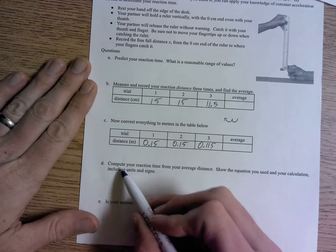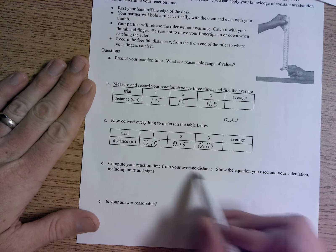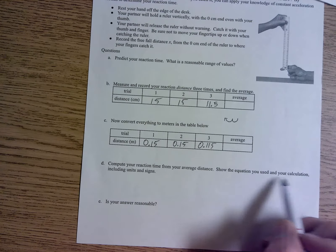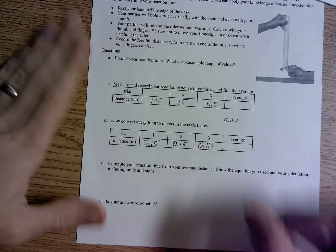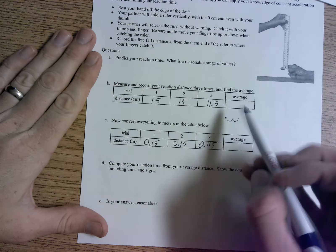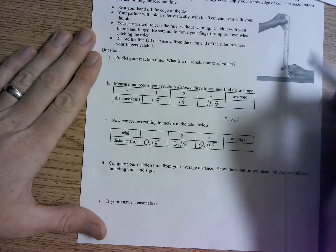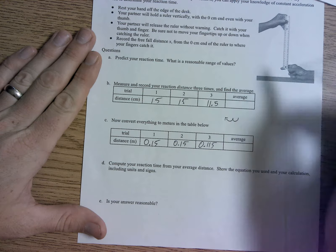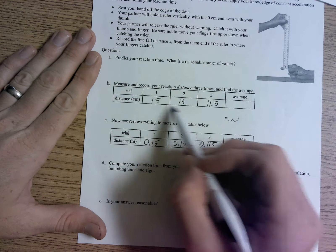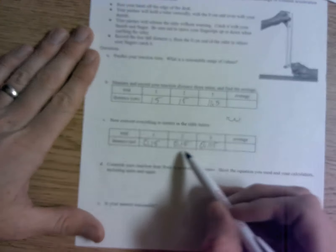We're back. So it says compute your reaction time for your average distance now. That's the next question. Show the equation that you used and your calculation. So the only thing that we can use is, well, we found the distance that it traveled, right? It traveled from 0 down to however far you grabbed it at. In this case, 15 centimeters or 0.15.